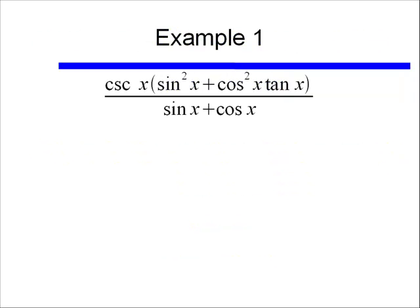Let's look at this, boy this looks like a total mess. We have a cosecant times in parentheses sine squared x plus cosine squared x times tangent x, all over sine x plus cosine x. We need to simplify this. What's the first thing we should do? Well we could do the distributive property, but I think first of all I'm going to change my cosecant and my tangent into sines and cosines. I have some sines and cosines already, let's put them all in terms of sine and cosine.